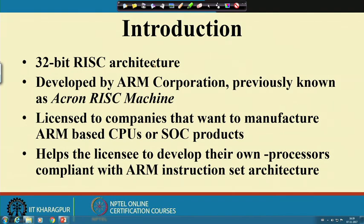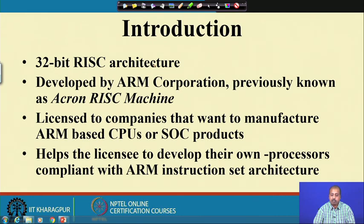ARM was originally proposed as a 32-bit RISC architecture, developed by ARM Corporation, previously known as Acorn RISC Machine. It is licensed to companies that want to manufacture ARM-based CPUs or SoC products. You will never find any chip whose name is ARM — you will find chips like NXP or STMicroelectronics STM series — because ARM does not manufacture any chip. They do the design and license it to various companies, who modify it to suit their own requirements.